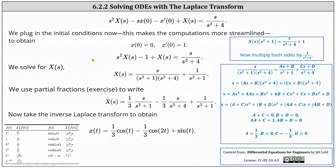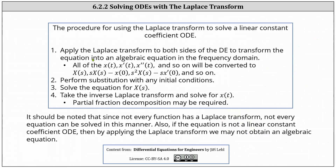Before we go, let's summarize our procedure. Number one, we apply the Laplace transform to both sides of the differential equation to transform the equation into an algebraic equation in the frequency domain. Number two, we perform substitution with any initial conditions. Number three, we solve the equation for big X of s. And number four, we take the inverse Laplace transform and solve for x of t. Partial fraction decomposition may be required. It should be noted that since not every function has a Laplace transform, not every equation can be solved in this manner. Also, if the equation is not a linear constant coefficient ODE, then by applying the Laplace transform, we may not obtain an algebraic equation.